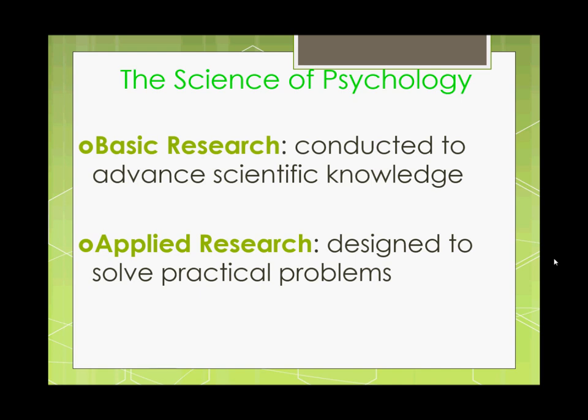In psychology we have two very broad categories of research methods. On the one hand we have basic research, which we use to advance scientific knowledge. With basic research we essentially have questions we want to answer. It's really about advancing scientific knowledge, developing psychology as a science, and just having more information we can point to through research to say this is what we know about people, behavior, and emotions.